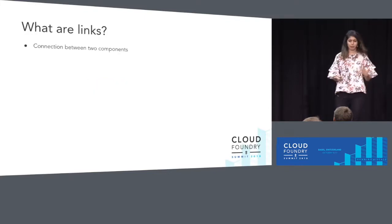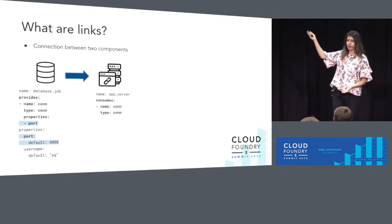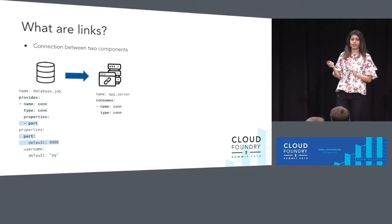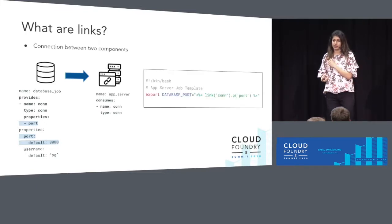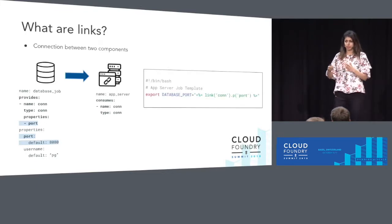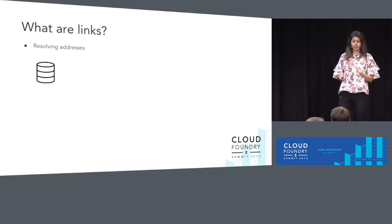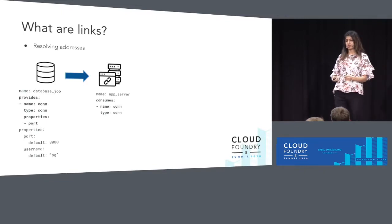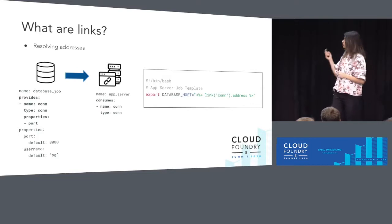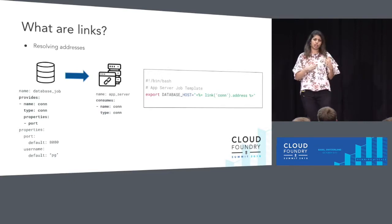An example is when you consider the connection when a database is providing a link to a server. The database is providing a link connection of name and type 'con', exposing the property port, and the server is consuming it. At runtime in the job spec, Bosch will resolve that property for you during deployment. They also solve the problem of sharing addresses between links, because the link itself contains the provider instance address, so the job spec is able to resolve it.